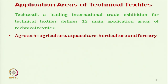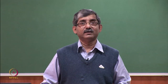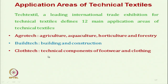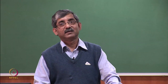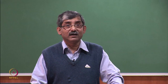The first area is Agrotech — technical textiles used mainly for agriculture, aquaculture, horticulture, or forestry applications. Buildtech is basically building and construction, like fibre-reinforced concrete; these technical textiles and composites come under Buildtech. Clothtech covers technical components for footwear or clothing — nowadays, the majority of components in footwear are basically textile, and these come under Clothtech.